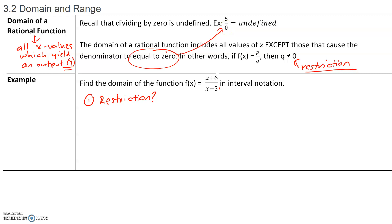So what's our restriction? The restriction is that the denominator q, whatever that expression is, cannot equal zero. In our case, our denominator is x − 5, and that cannot have a value of zero because if it did, we would have division by zero. So if you add 5 to both sides, x cannot equal 5. To find the restriction of the domain of a rational function, we take the denominator and set it not equal to zero.